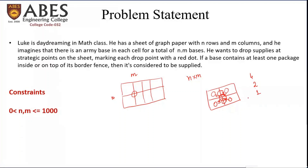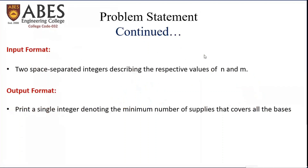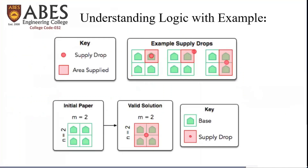So we have to find out the minimum number of supplies given the number of rows and columns representing the bases — N×M different bases. The input is two space-separated integers N and M, and the output is a single integer denoting the minimum number of supplies that covers all the bases. The diagram confirms that dropping supplies at different individual places requires more supplies, while dropping at the center requires only one.